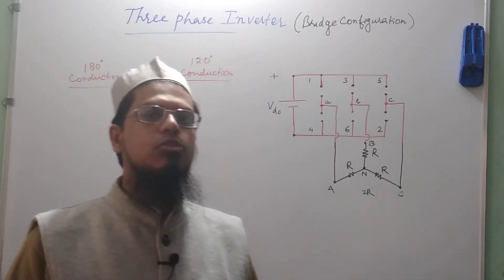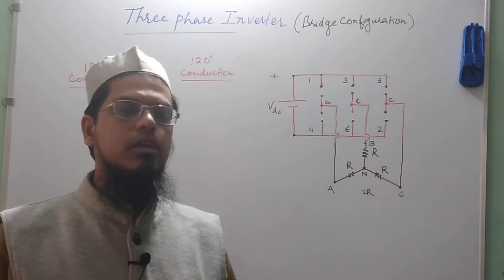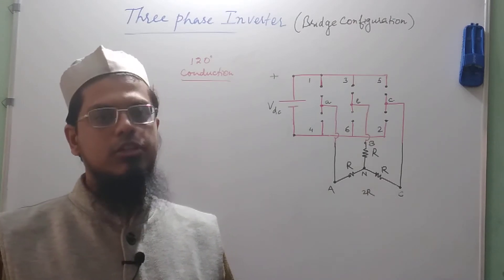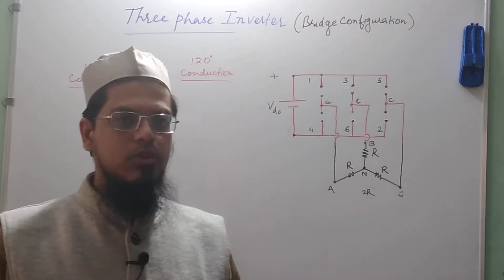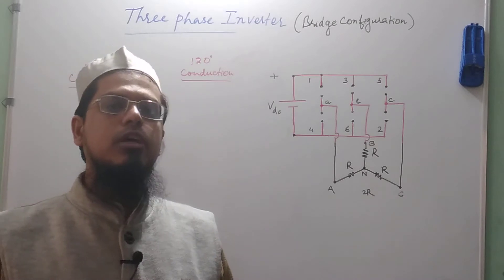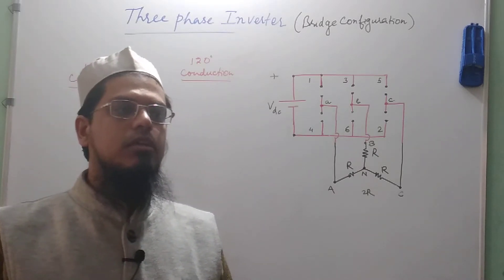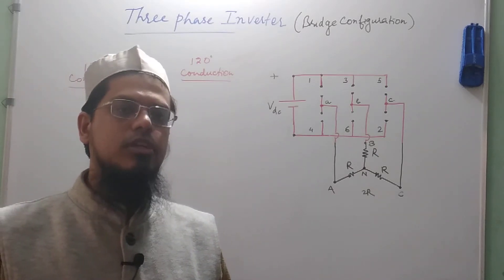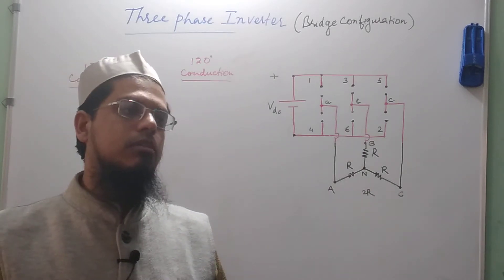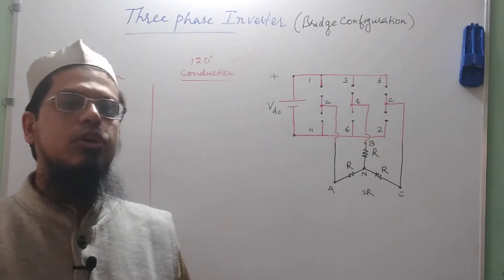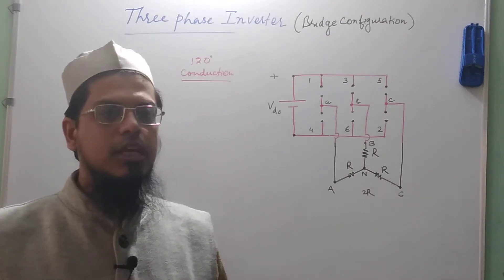In the earlier lectures I was talking about single-phase inverter. An inverter is a power electronic converter which converts a DC voltage into an AC voltage. In many industrial applications we require an inverter because we need to control the AC voltage and the frequency. Especially in industrial drives, speed control of induction motors normally employs V/F type of control, wherein we have to simultaneously control the output voltage and the frequency given to the induction motor.